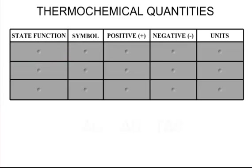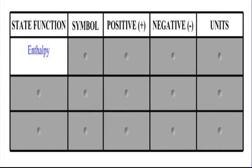Let's start with our thermochemical quantities. These are the quantities that we're going to measure, calculate, and interpret while we're doing these thermo problems. The first thing we're going to take a look at is a thing called enthalpy. Many people think enthalpy is just like heat, and it kind of is, but it's more of the total energy in a system. The symbol for enthalpy is delta H.